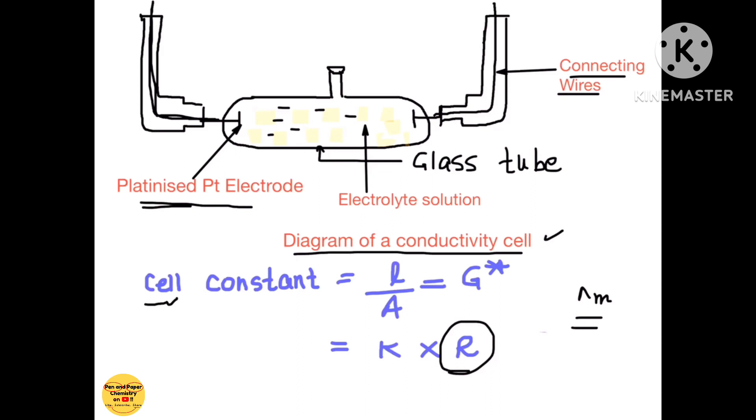Now first of all in this conductivity cell we fill the electrolyte whose conductivity is known at different temperatures and we measure the resistance. So we know the conductivity, we know the resistance, we can determine the cell constant. And what is cell constant? The distance between the electrodes divided by the area of cross section of each of the electrodes that we are using.